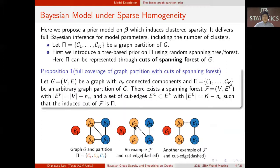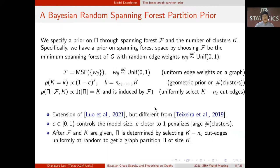First, we choose a spanning forest with three edges, and by choosing a cutting edge, the connected components become a graph partition. Using this representation, we specify a prior on pi through random spanning forest and a prior on the number of clusters K. Specifically, we have a prior on spanning forest space by choosing F be the minimum spanning forest of G with random edge weights wij.